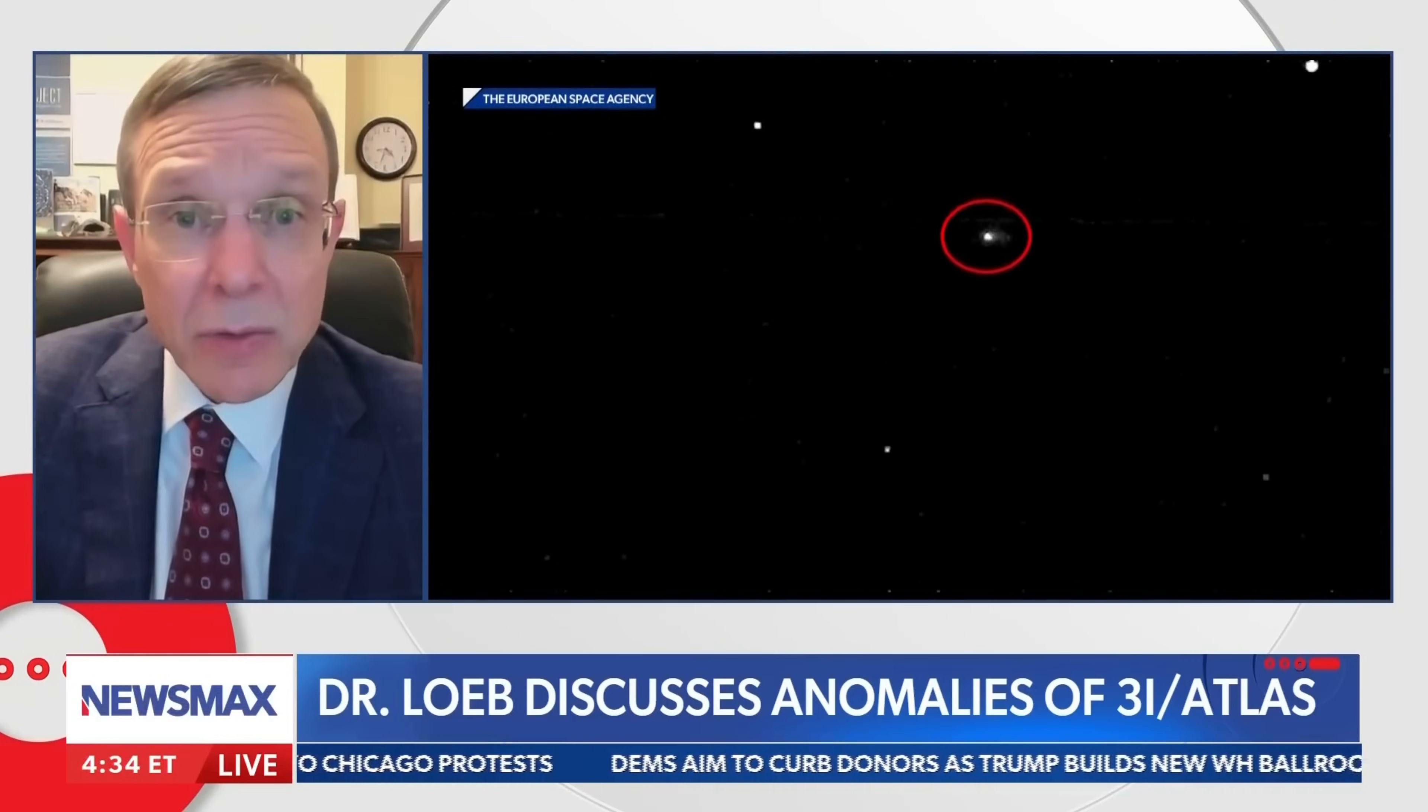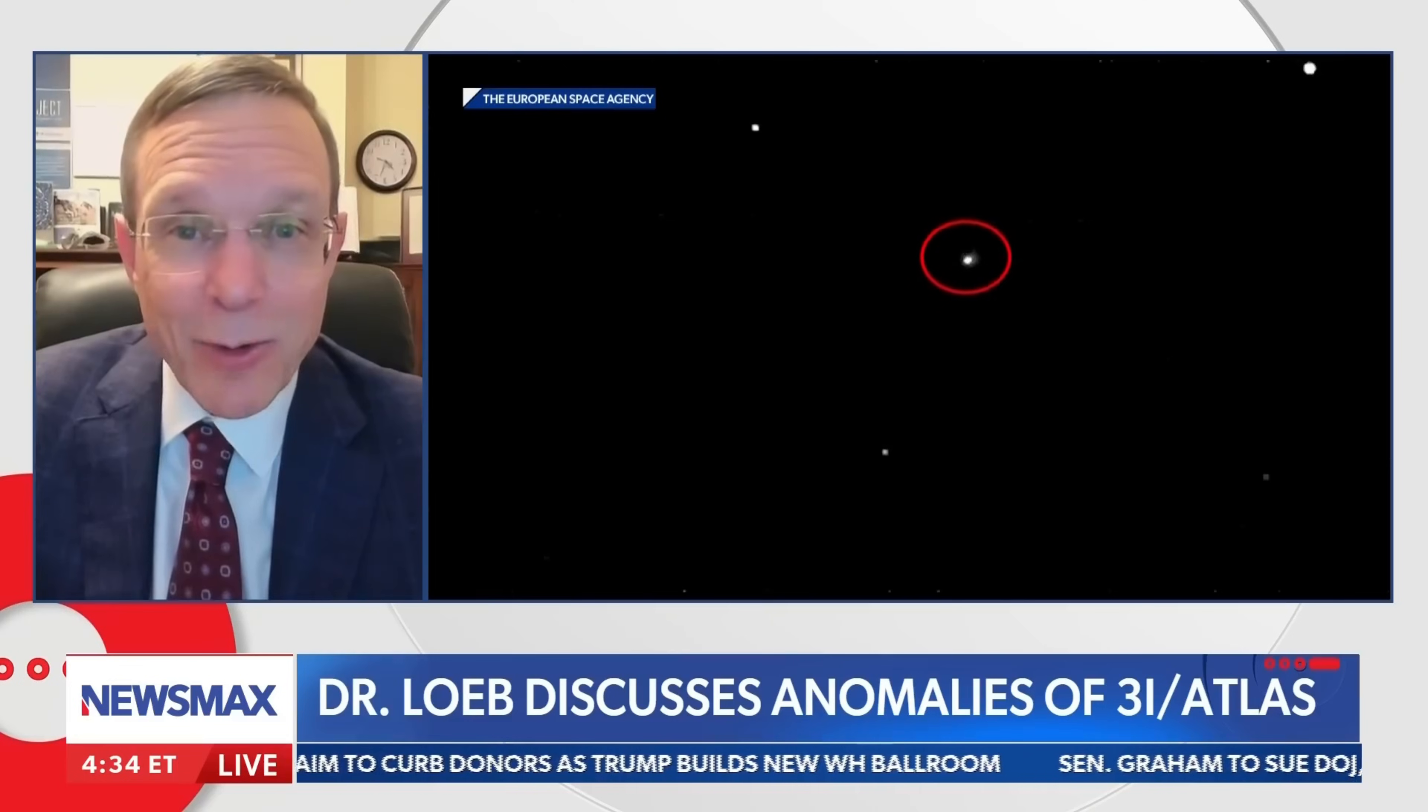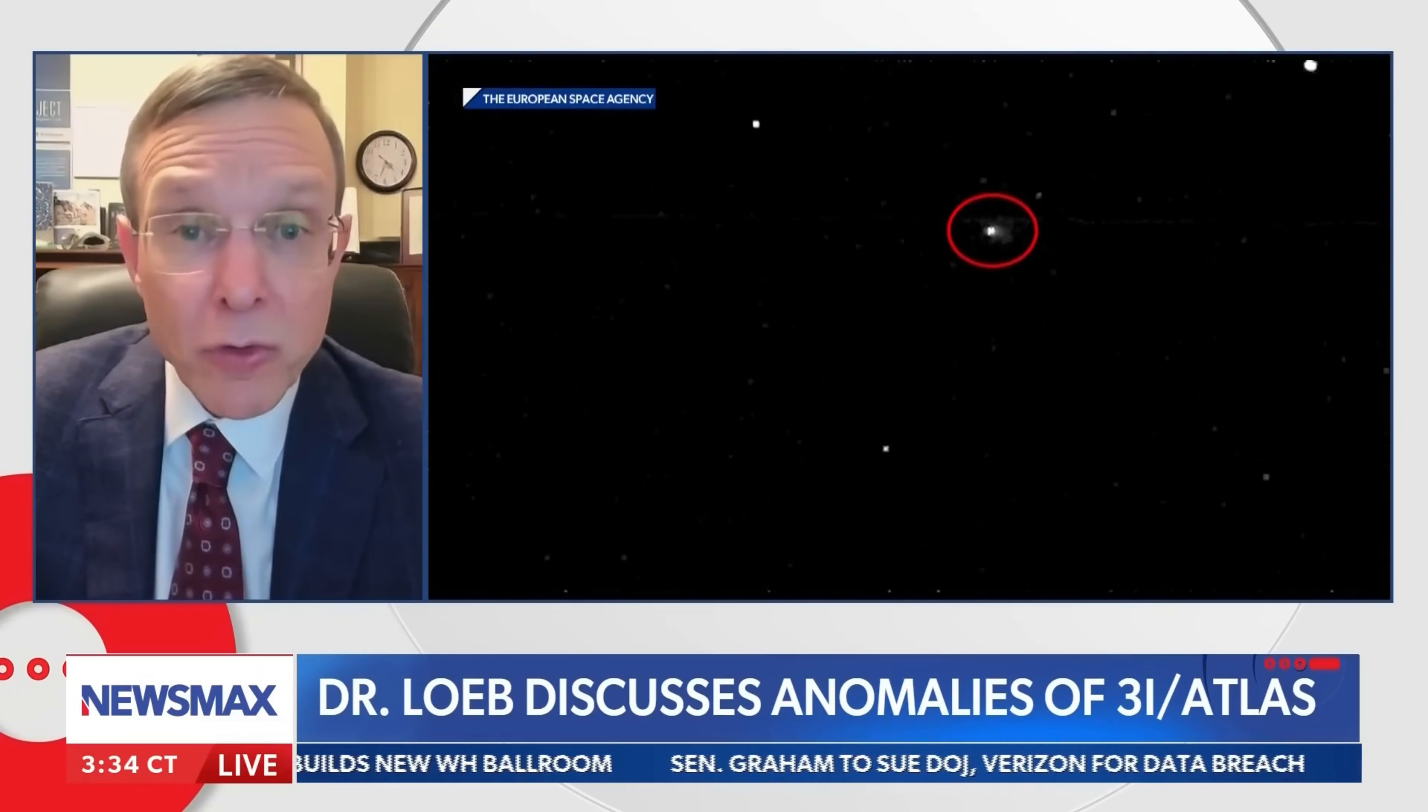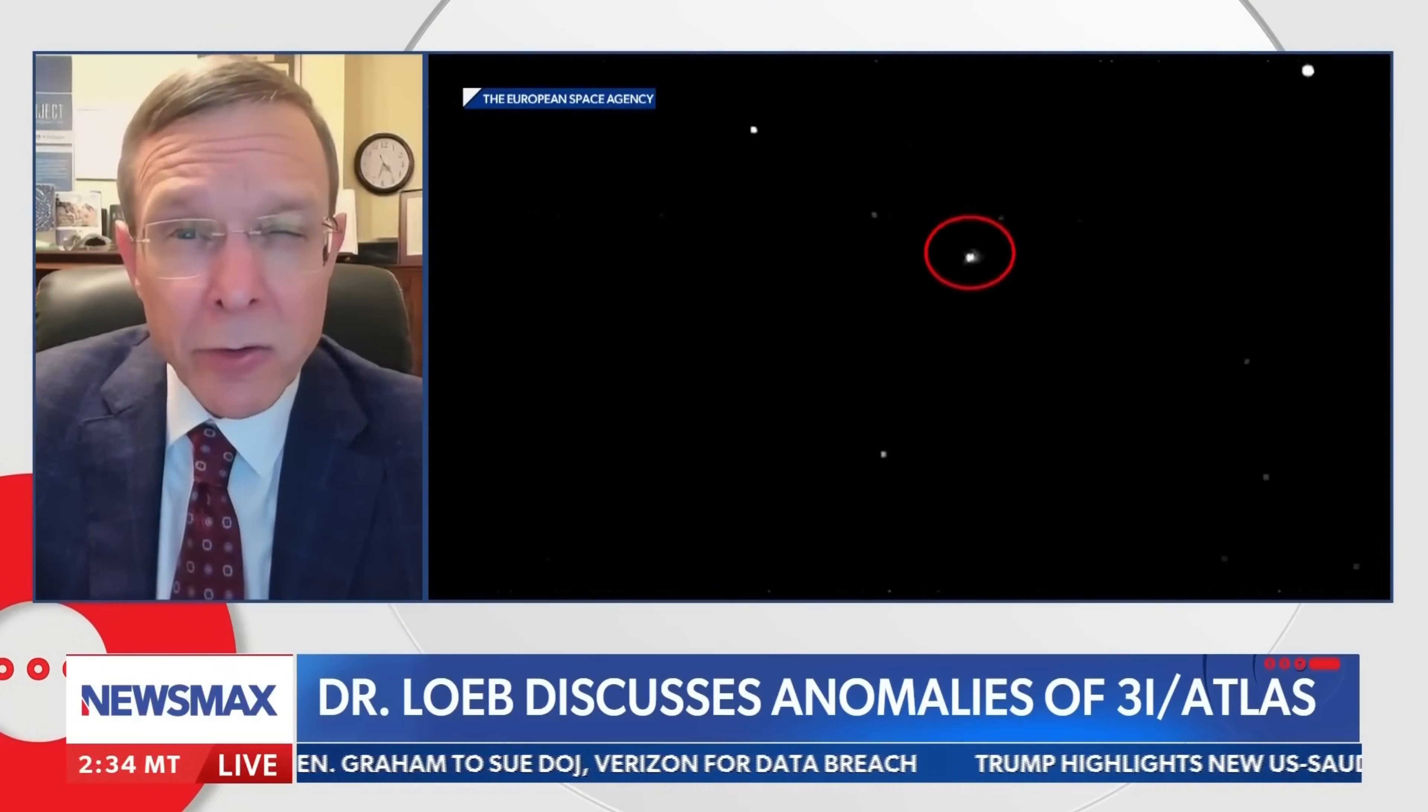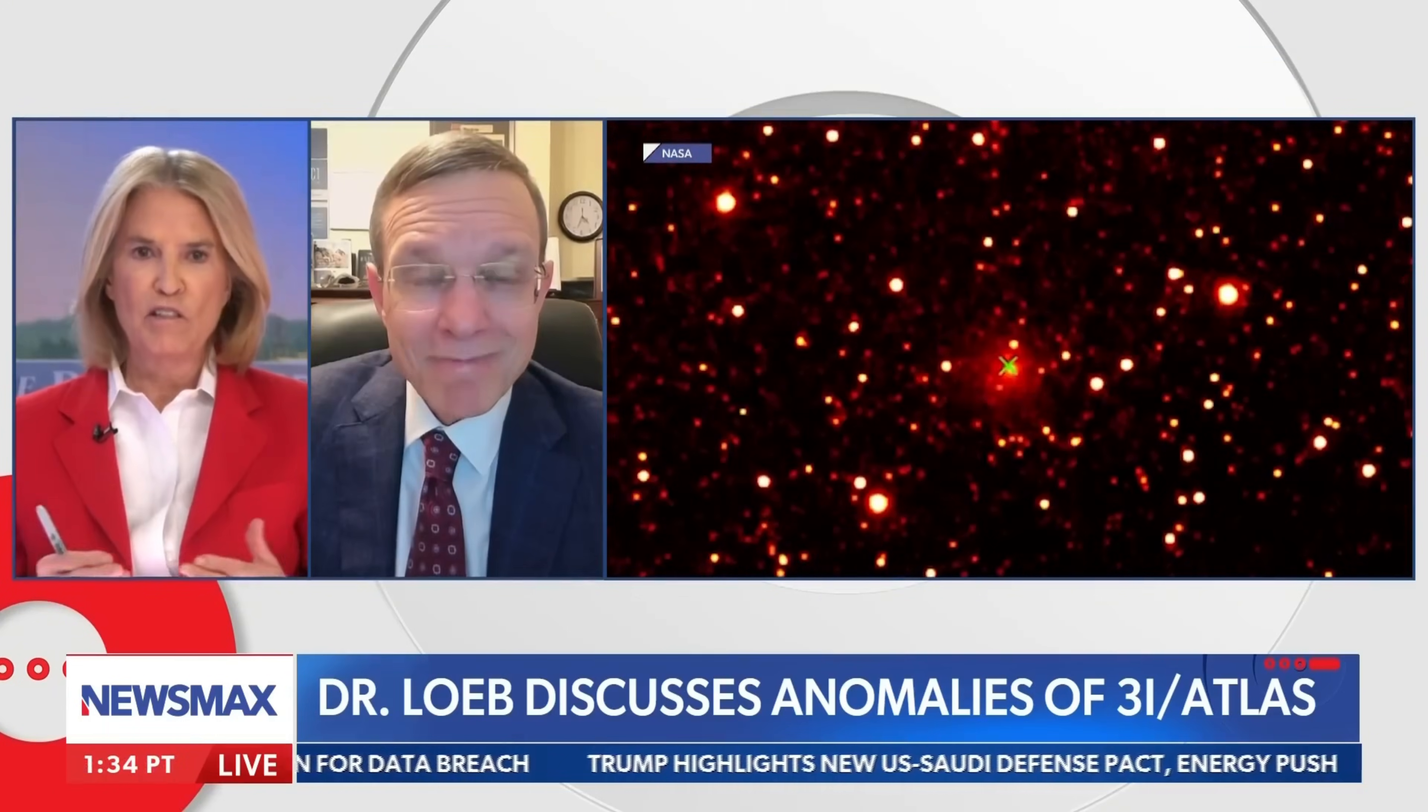Loeb's analysis has brought to light several unusual characteristics of 3I Atlas, each of which raises questions about the object's true nature and origins. While the object has been observed to behave like a comet in some ways, its movements, composition, and structure appear to defy what we know about typical comets and other celestial bodies.